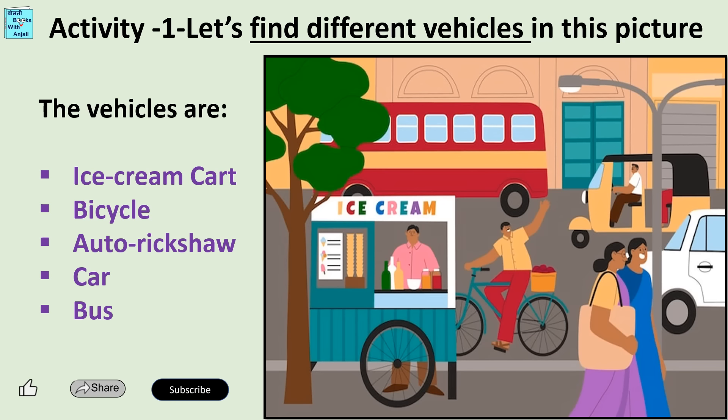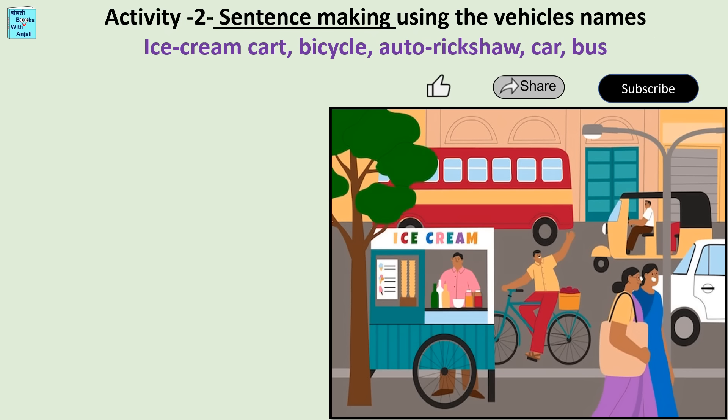The vehicles are: ice cream car, bicycle, auto rickshaw, car, and bus. Now we will try to make sentences on these words.